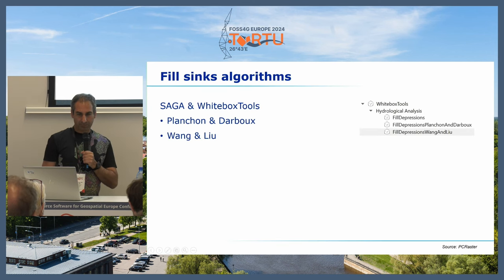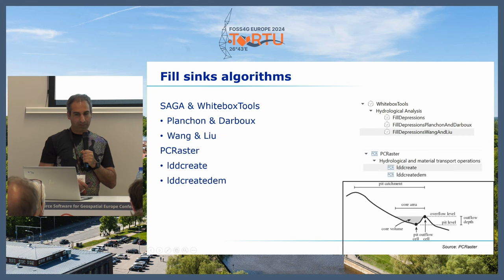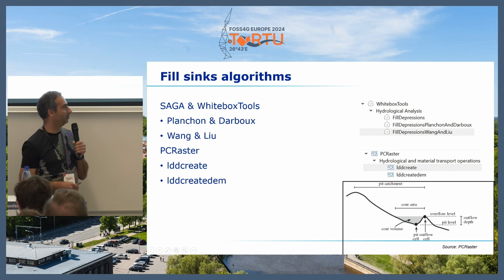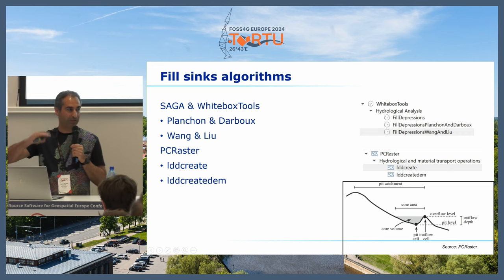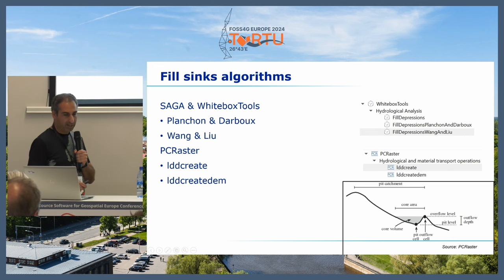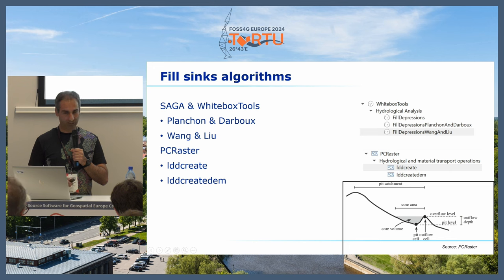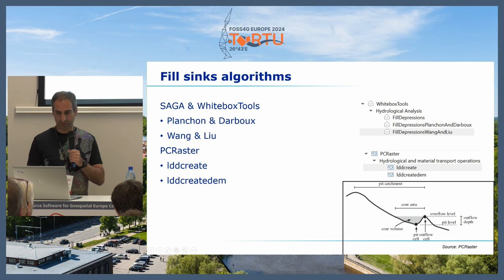For fill sinks algorithms, Saga and Whitebox tools offer Blanchon and Darbo, and Wang and Liu. PCRaster uses a specific one with more flexibility — five parameters controlling the core area and core volume — so you can control how much you want to fill depressions, which is useful if you don't want to fill all of them. With LDD Create you create the flow direction; if you want the corrected DEM you use LDD Create DEM. Normally you just need it in one step: filling the sinks and getting the flow direction from LDD Create.